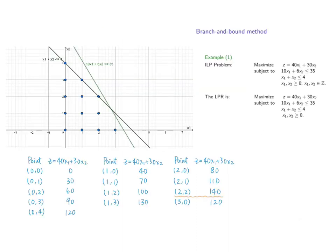If we plot the inequalities on the plane and highlight the points that satisfy all constraints for the ILP problem, we obtain the feasible integer points. Checking all these points, we find that the ILP problem has a maximum value of z equals 140, which is achieved when x1 equals 2 and x2 equals 2.